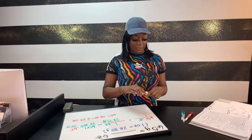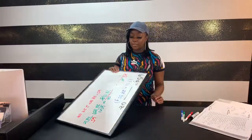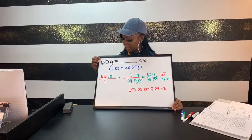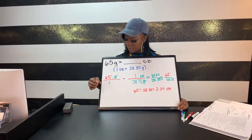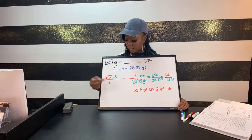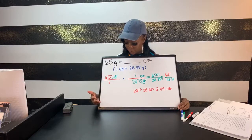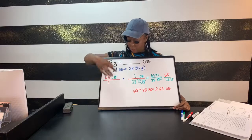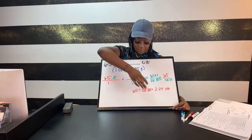One more time from the top: we always start with our original conversion. It says 65 grams is how many ounces, so I write my 65 grams first. You can write it as a ratio over one to create the fraction. In setting up units, if I start with grams here, grams has to be in the denominator in my second ratio.